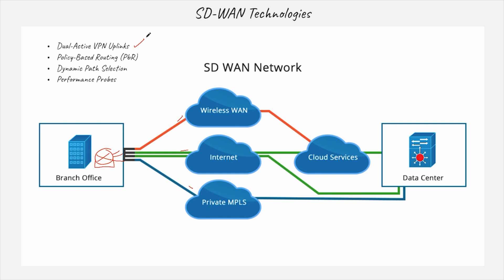The first one is dual active VPN uplinks. Let's say you have a router here and you want to create a VPN tunnel going from the branch office to the data center, so all the traffic is going to be encrypted. That VPN tunnel can go either through the wireless WAN, through the internet, or through the private MPLS link — and the software-defined network is going to make it happen.